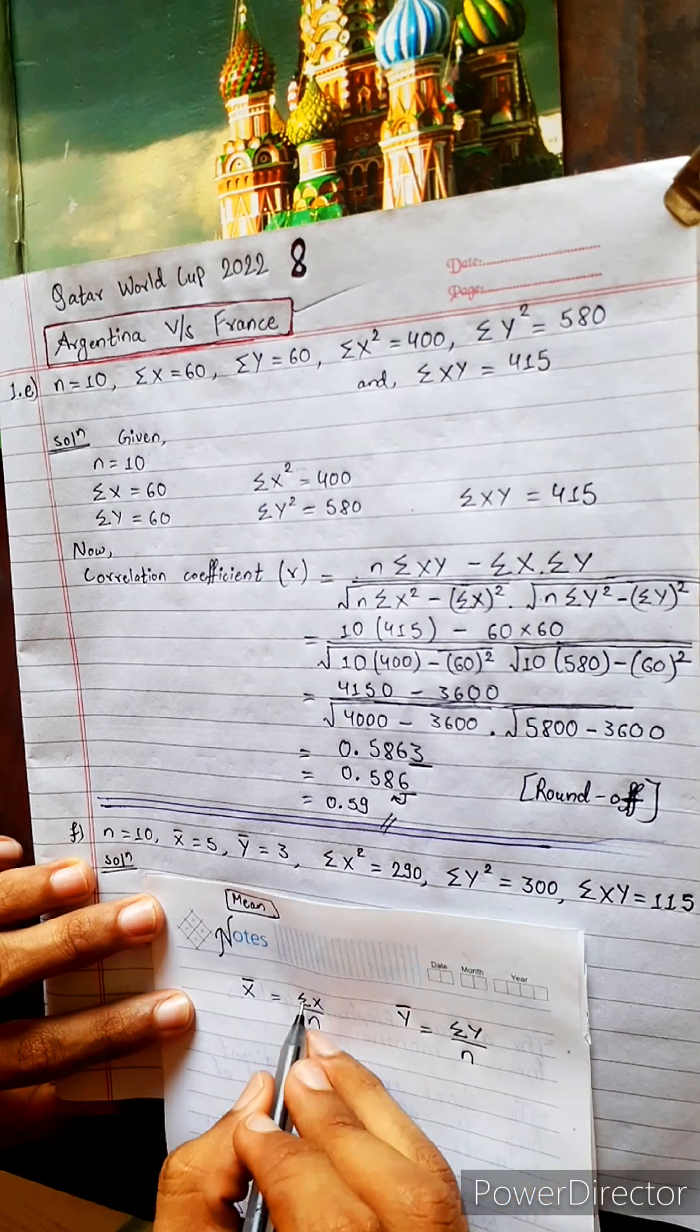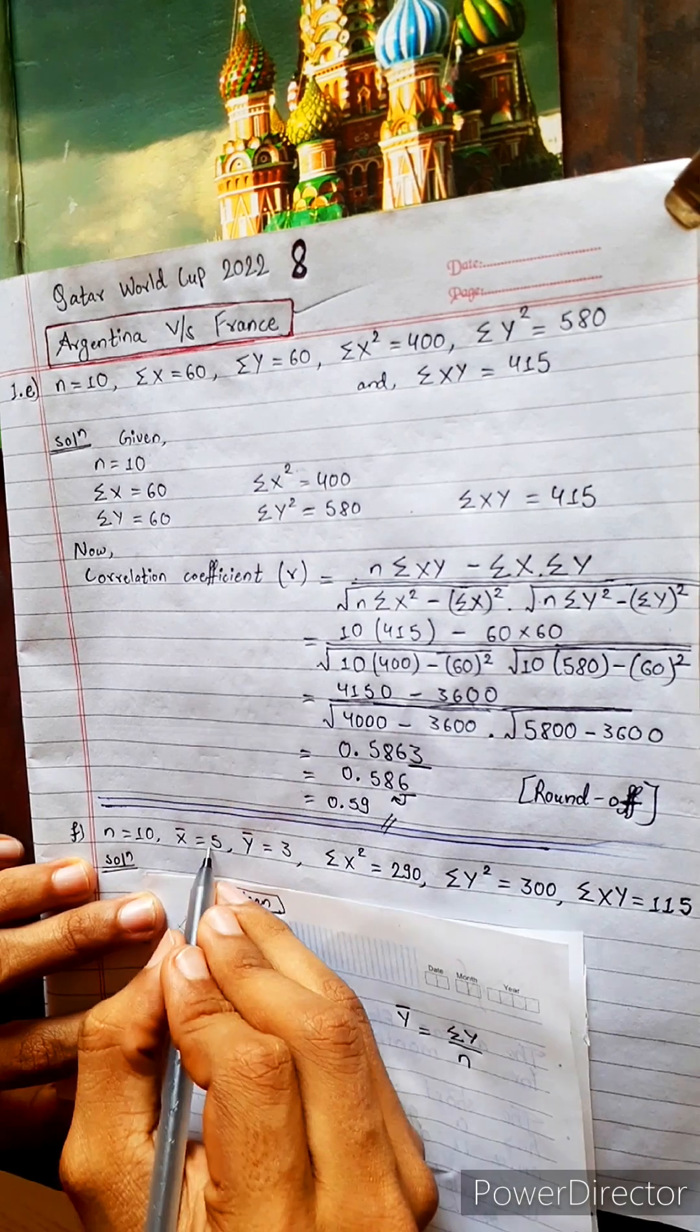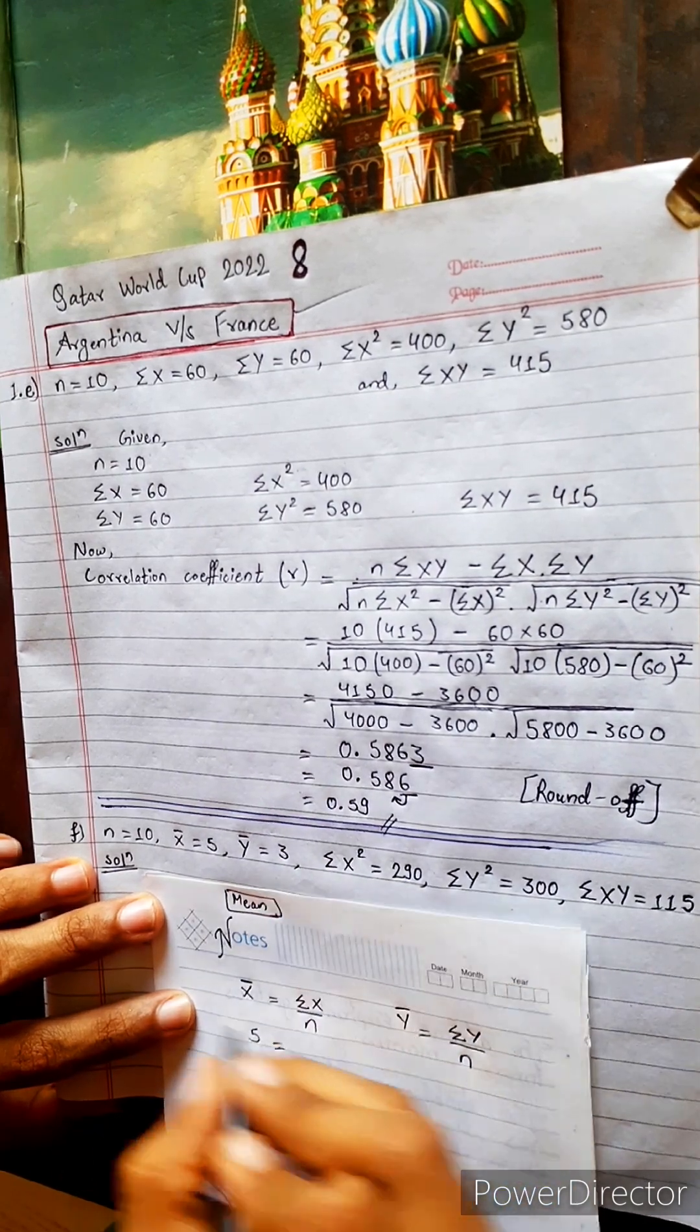So using these two formulas we can get summation x and summation y. Okay, let's use: x bar is given 5, n is given 10.